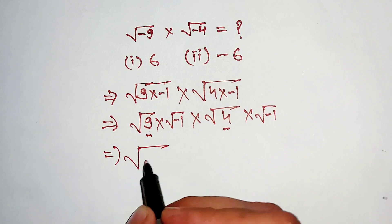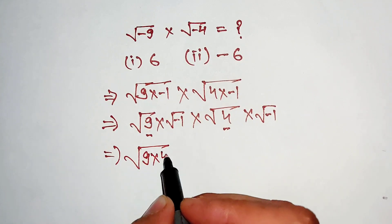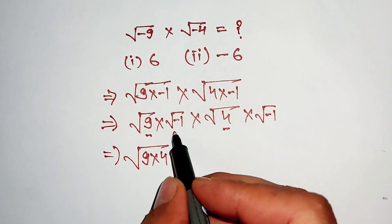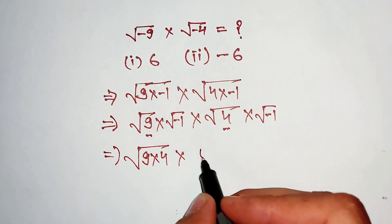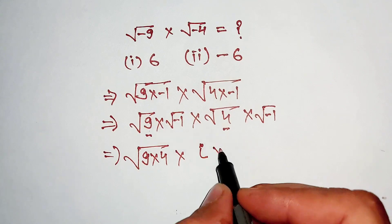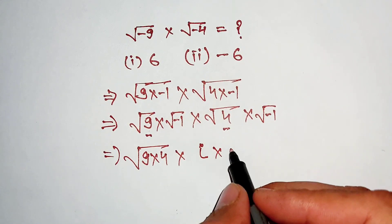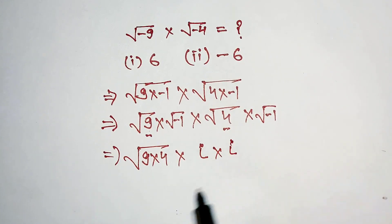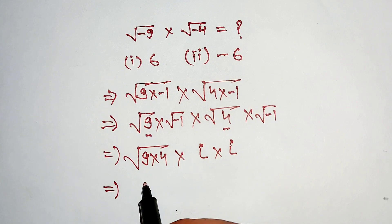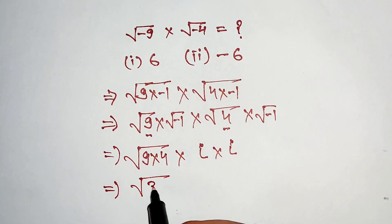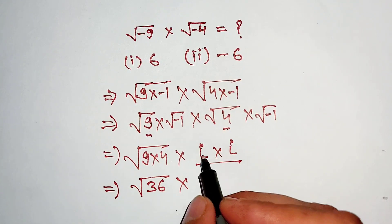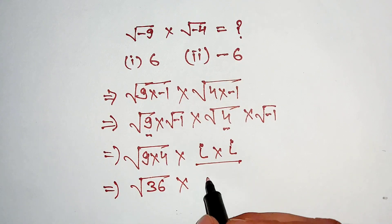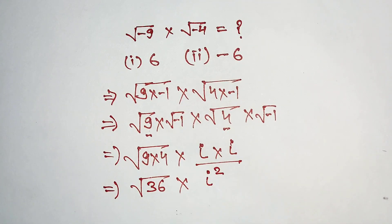9 multiply 4, and the square root of negative 1 is equal to iota. Multiply — this square root of negative 1 is equal to iota. Now this is equal to 36, and iota into iota is equal to iota square.